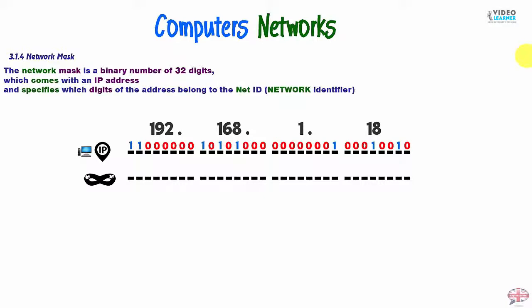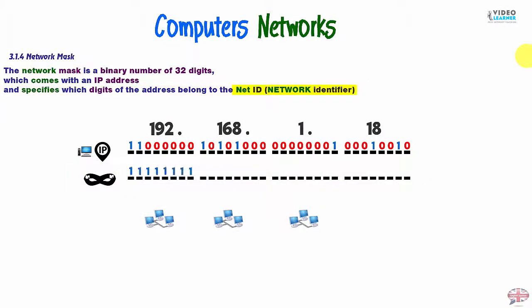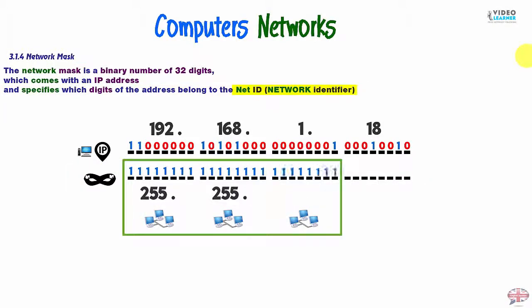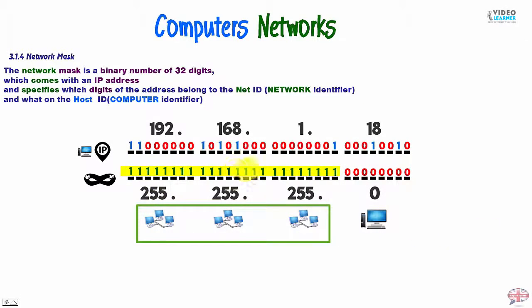This Network Mask specifies which digits of the address belong to the NetID Network Identifier, and what on the HostID Computer Identifier. As you can see, when we have Network ID we have Aces, and when we have Computer ID we have zeros within that network. It's so simple.